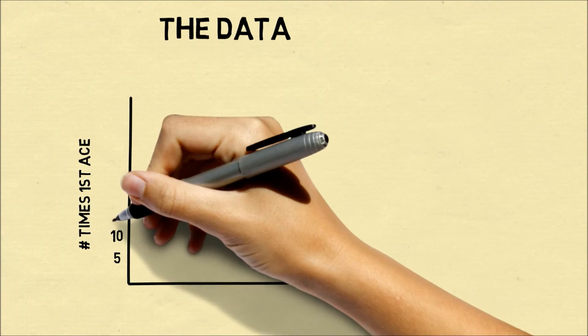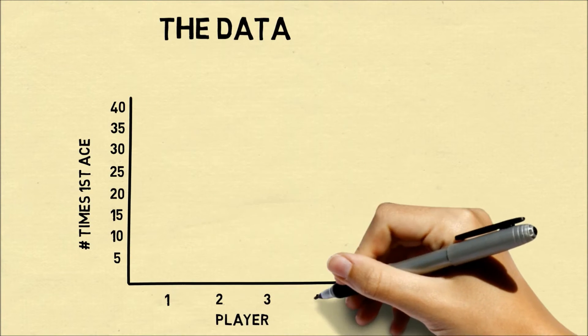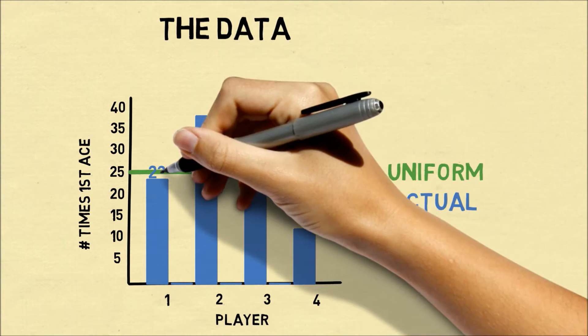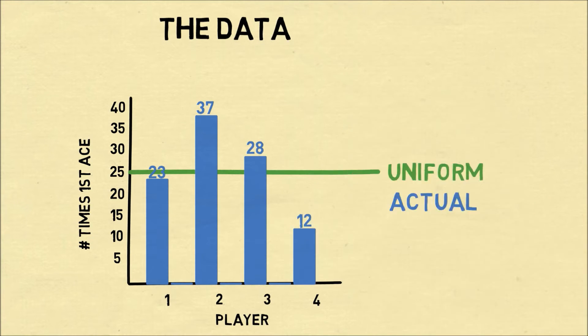If dealing to the first ace were a fair system, we would expect a uniform distribution. What we found was a big variance between the players. In particular, the earlier players were much more likely to get the first ace.